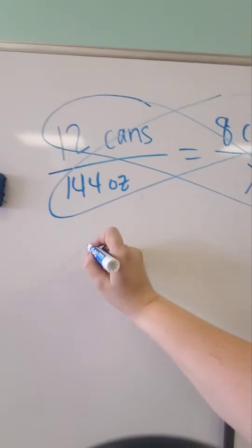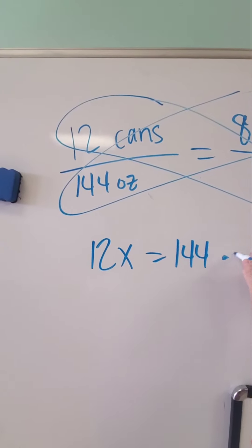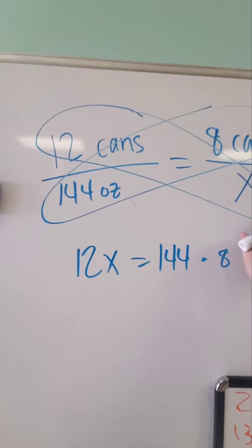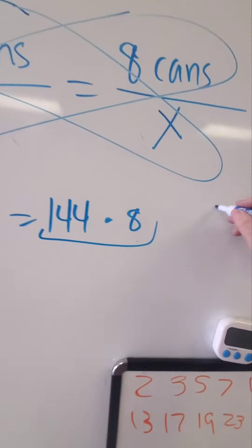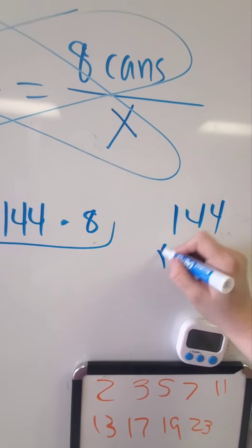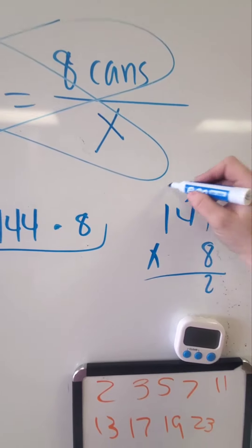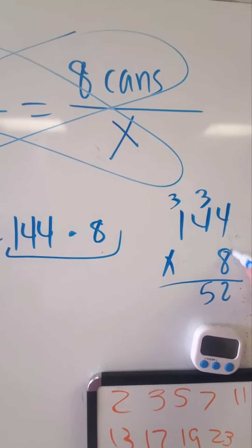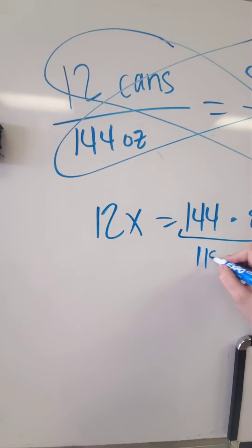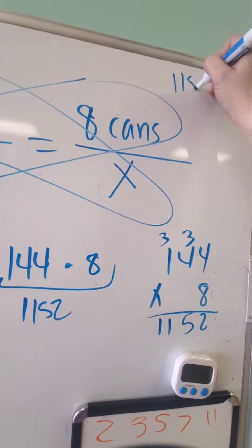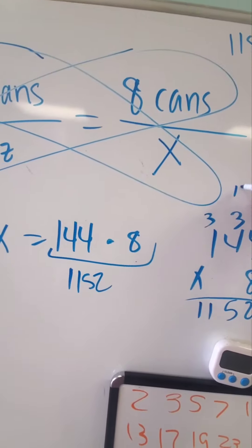12x is equal to 144 times 8. And 144 times 8 — you can use a calculator for this part — 8 times 4 is 32, plus 3 is 35. 8 times 1 is 8, plus 3 is 1,152. So this times this is 1,152.